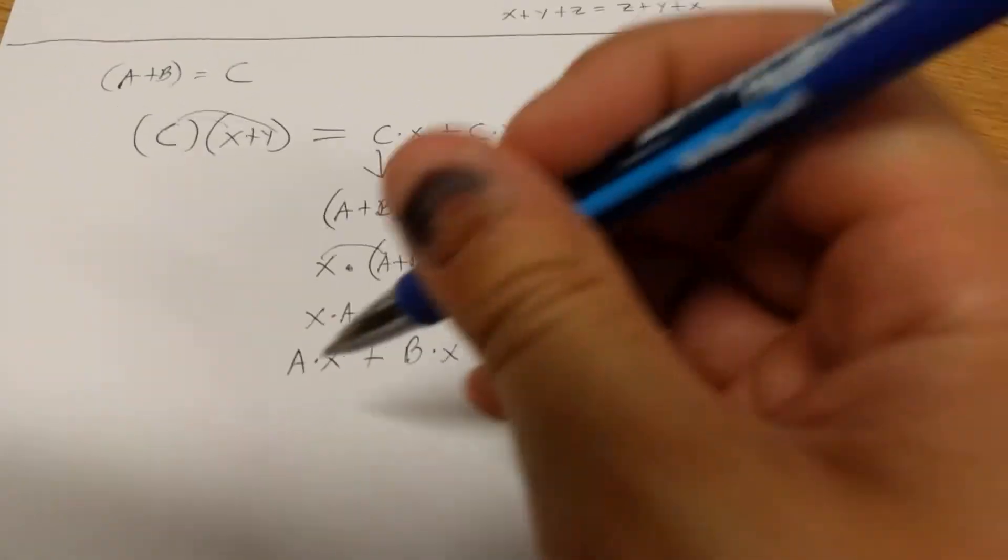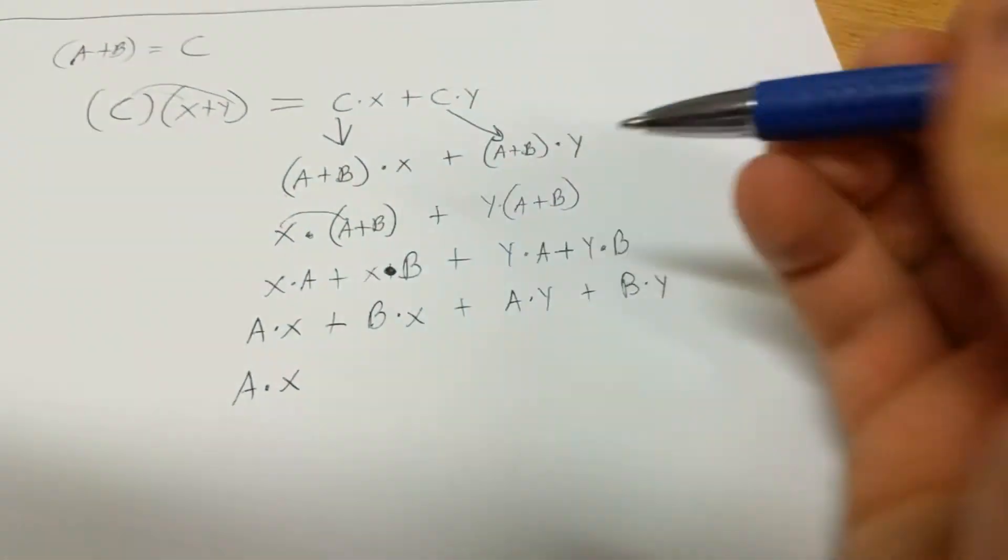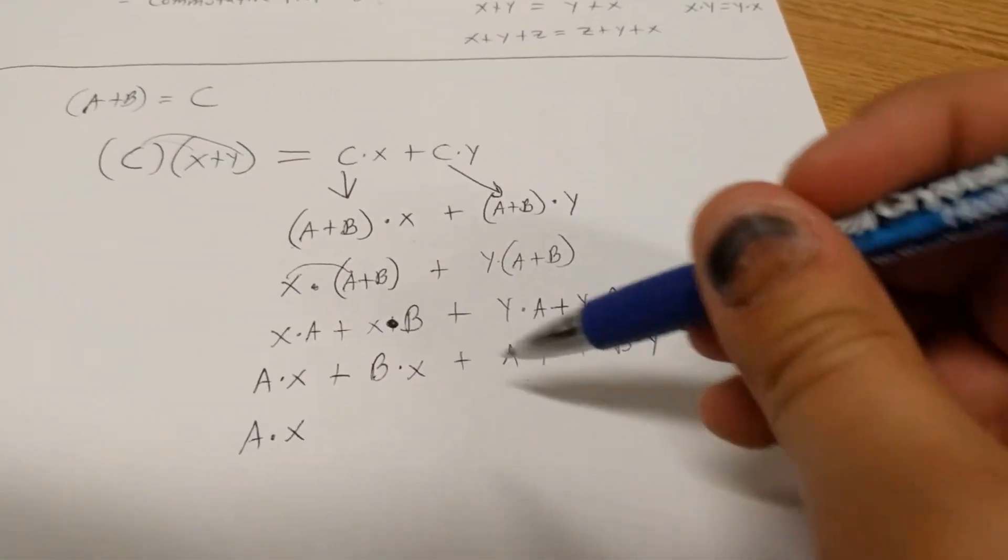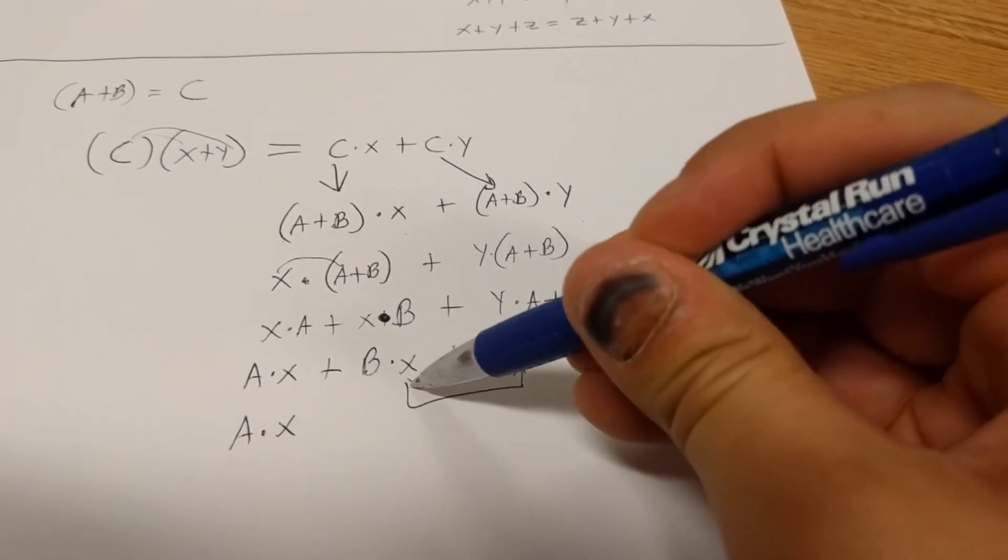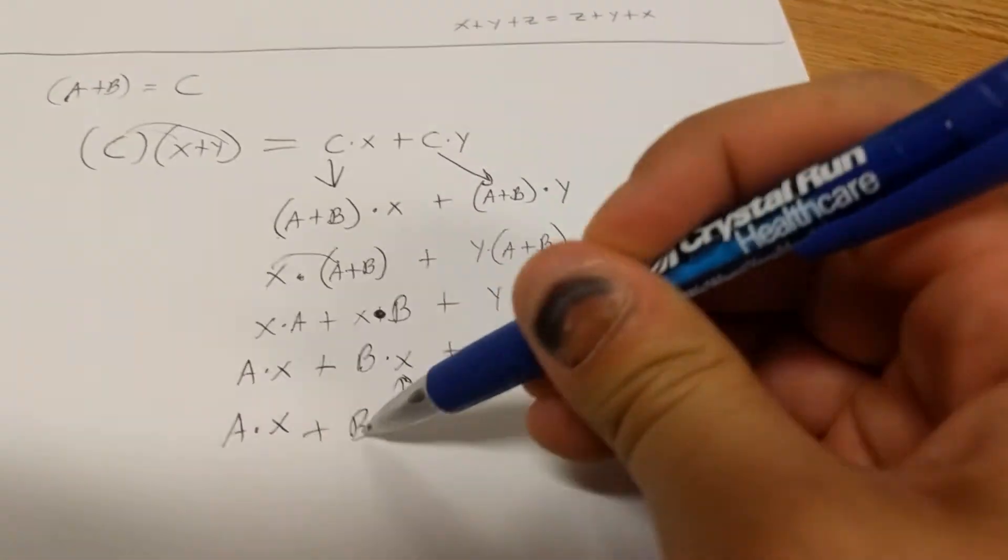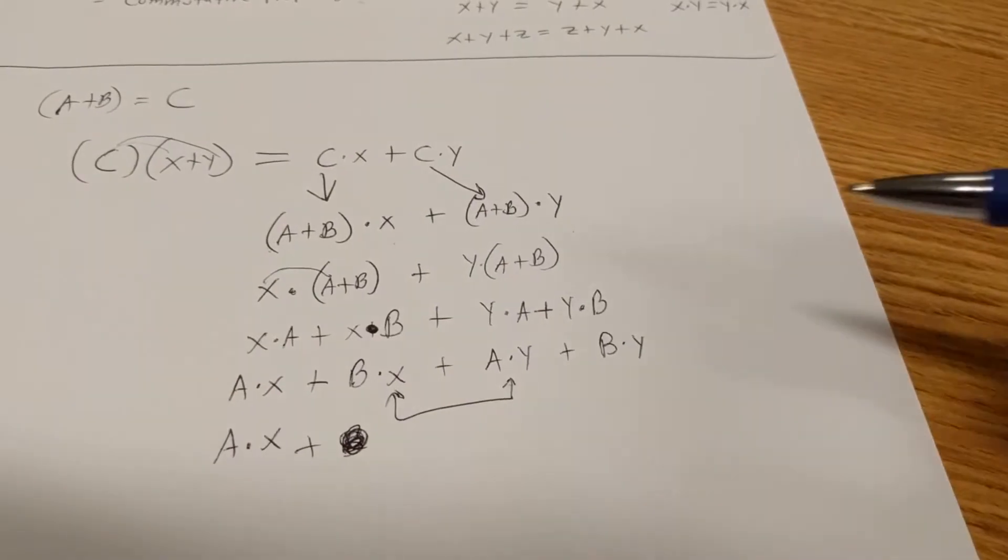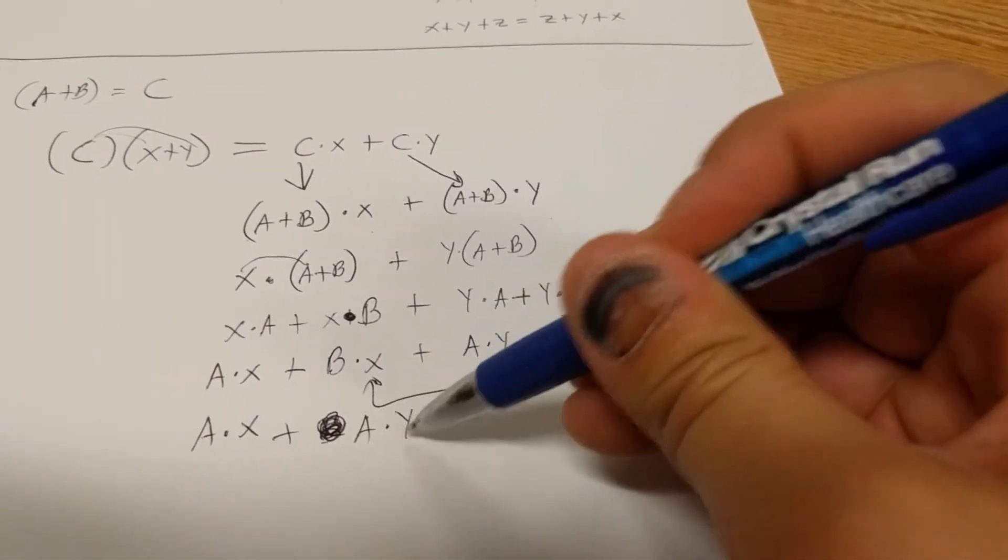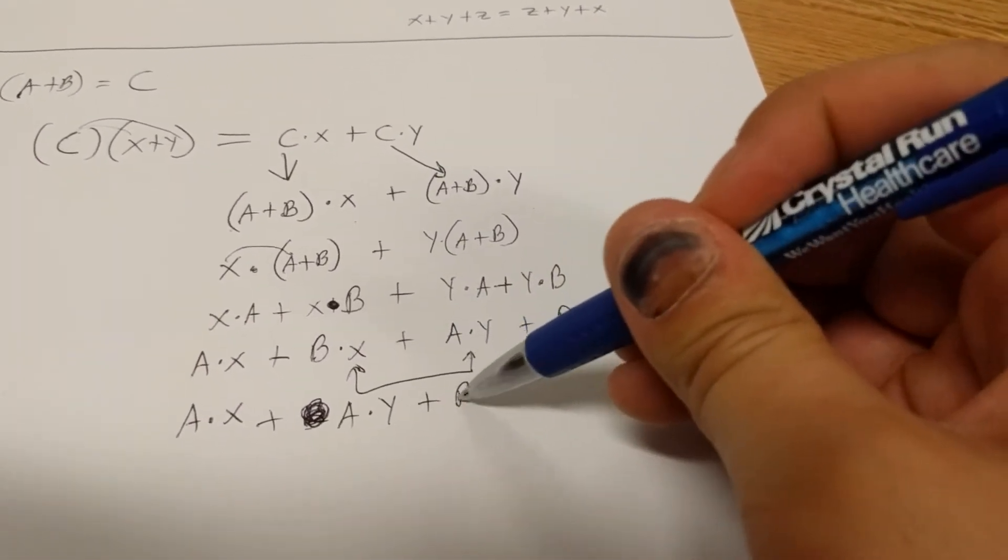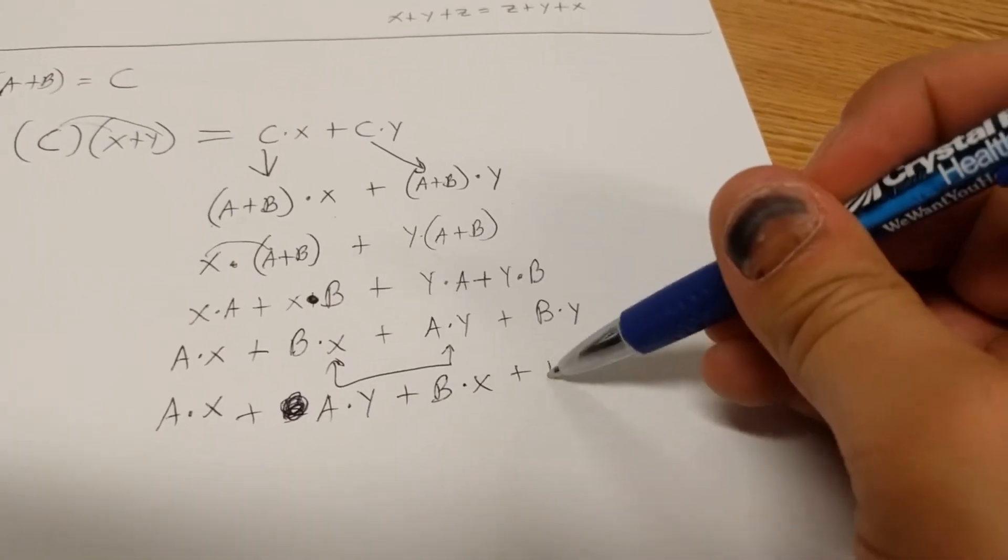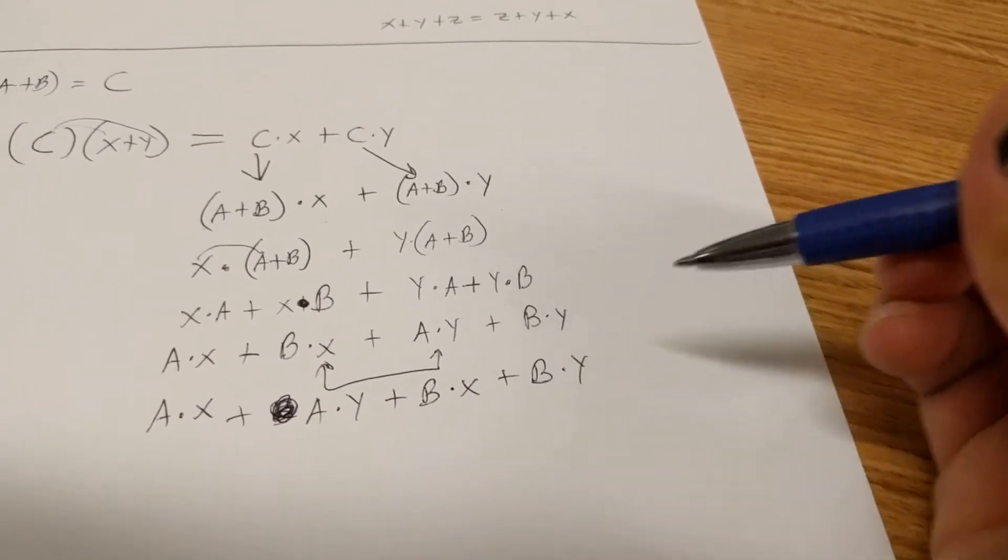We want to use our commutative property again so we can rewrite these addition terms. We want it to look exactly like ax plus ay plus bx plus by, basically putting the terms in alphabetical order. It was arbitrarily chosen, it just happens to work out conveniently that way. So a times x is fine, then a times y, so we swap these two. Plus b times x plus b times y. I'm just going to rewrite it because it looks kind of sloppy: ax plus ay plus bx plus by.